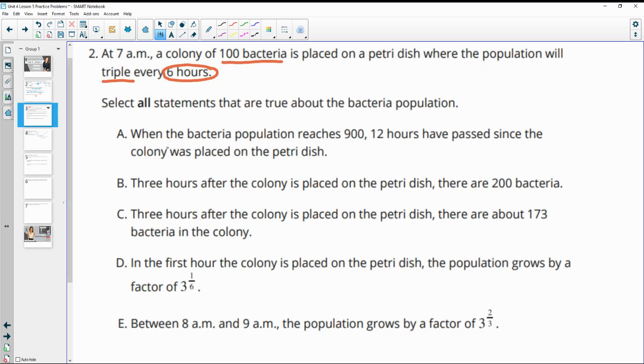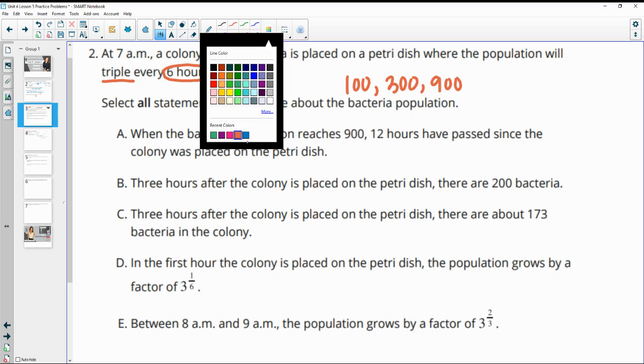So A says when the bacteria population reaches 900, 12 hours have passed. So we initially have 100 bacteria, then it will triple or multiply by three. And every time it does this, six hours have passed.